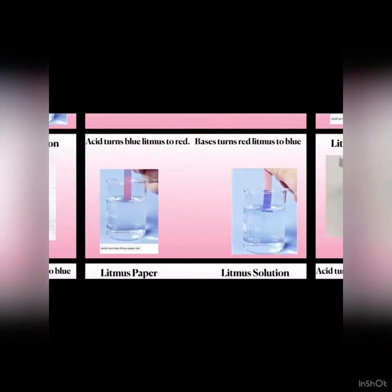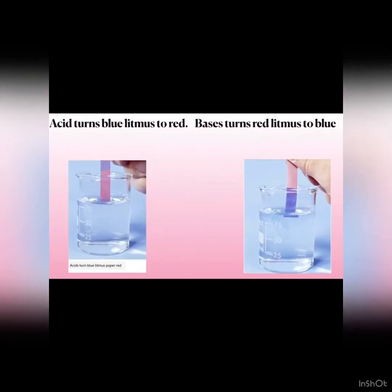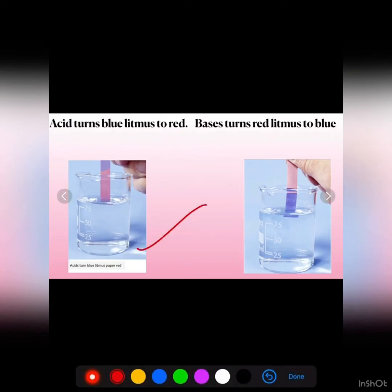As you can see, when we dip a strip of blue litmus paper in an acidic solution, it becomes red. And when red litmus paper is dipped in a basic solution, it turns blue.